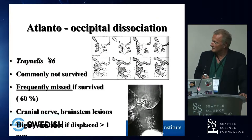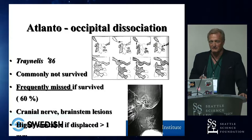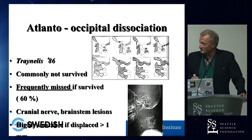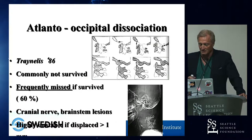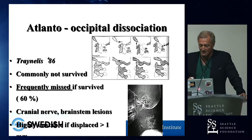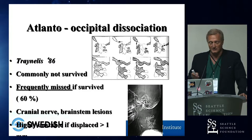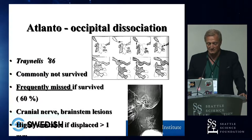Cranio-cervical injuries have been a big problem for so many years due to a variety of circumstances. Dr. Tranellis, a great guy now in Chicago, classified them based on direction of displacement. Why is this a problem? Because 60% of his patients were missed in the beginning.